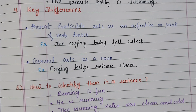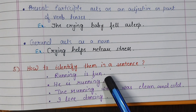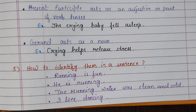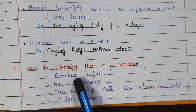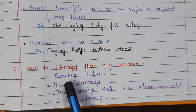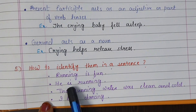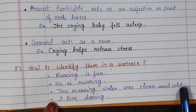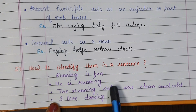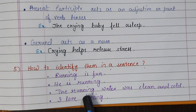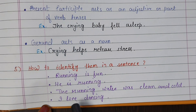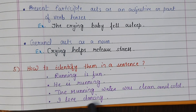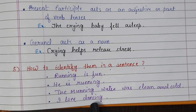How to identify them in a sentence? 'Running is fun' versus 'I am running.' In 'I am running,' running is part of the verb tense — present continuous — so running is present participle. In 'running is fun,' running is the subject of the sentence, so it is a gerund. 'The running water was clean and cold' — running describes water, a noun, so running is present participle. When it answers as a verb or adjective, it is present participle. 'I love dancing.' Love what? Dancing answers the question 'what,' so dancing is the object — it is a gerund.